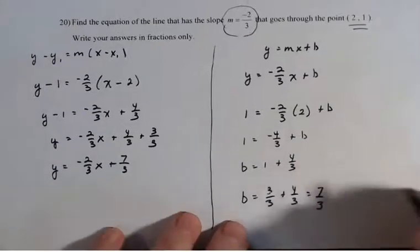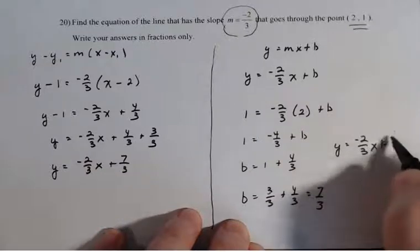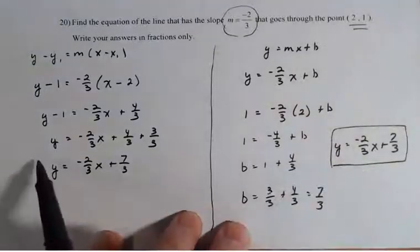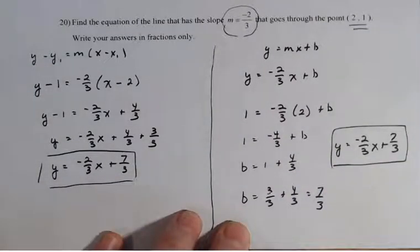So then the final equation for my line becomes Y equals minus two thirds X plus seven thirds. You can see that that and this are the exact same equation. So it doesn't matter which method to use. Just pick the one that you've always worked well with and makes sense.